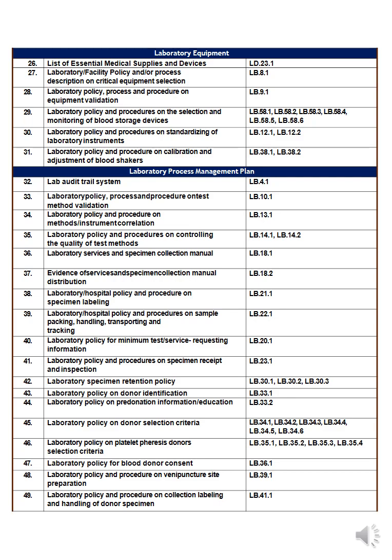Number thirty-eight is the laboratory/hospital policy and procedure on specimen labeling — how to label your specimen containers. Number thirty-nine is the policy on sampling, packing, handling, transporting, and tracking — covering everything from when the specimen is taken in the department until it arrives at the lab, including how to pack it, place it in a container, handle it, and transport it from one area to another.